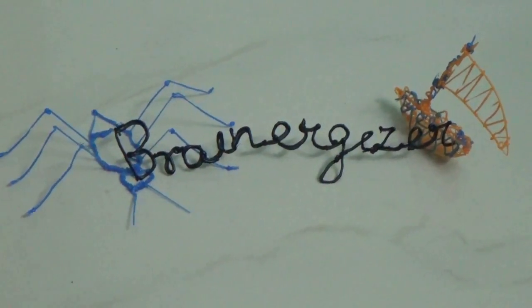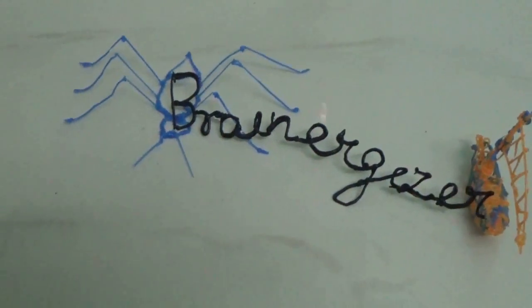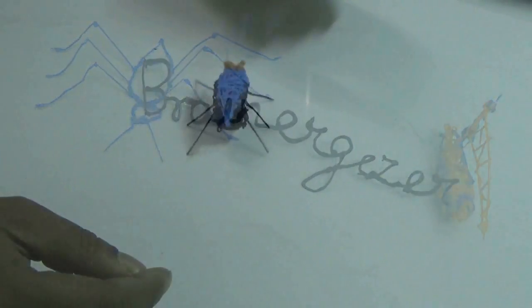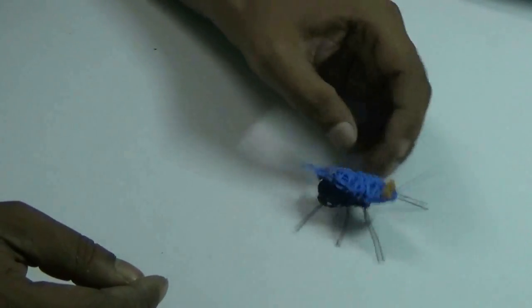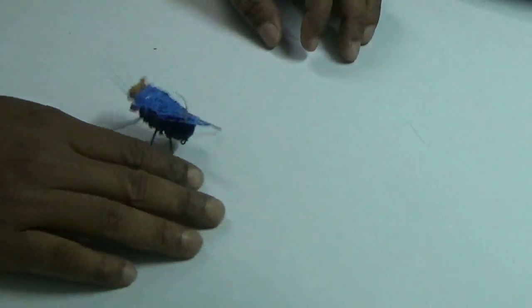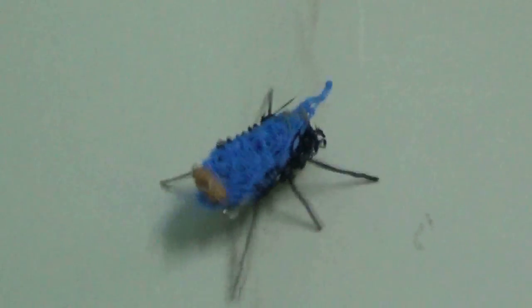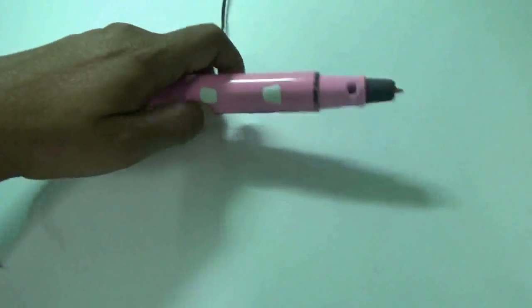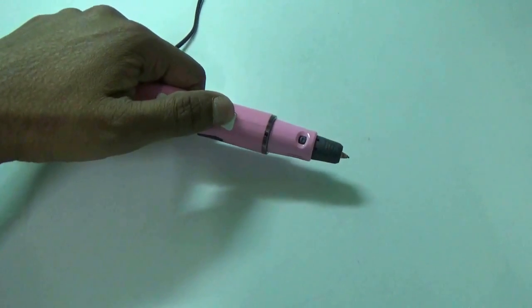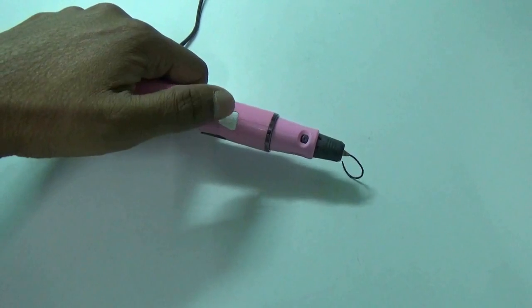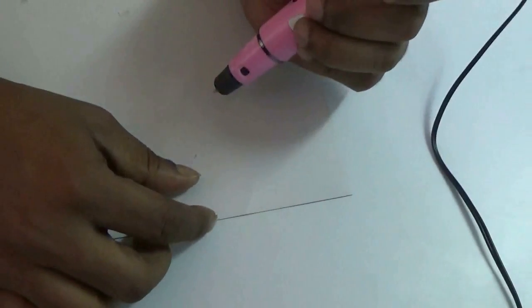Hi guys, welcome to the 3D world of Brainergizer. We are going to make this 3D drawing pen printed robo insect toy. Kids will love to play with this. For it, I have used this 3D drawing pen. First, on a piece of paper, draw the frame of the body.